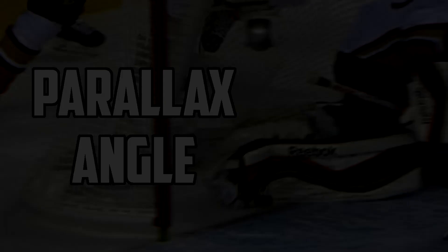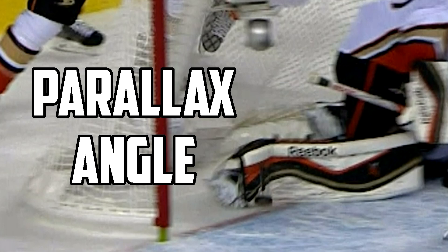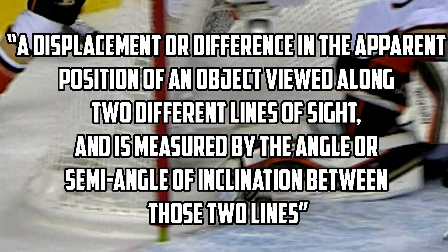The Parallax Angle is the goal judge's worst nightmare. It can be defined as a displacement or difference in the apparent position of an object viewed along two different lines of sight, and is measured by the angle or semi-angle of inclination between those two lines. To put it simply, it means that this right here isn't a goal. It looks like the puck has fully crossed the line because of the angle at which we are looking at it, even though just a bit of the puck is still touching the red goal line.